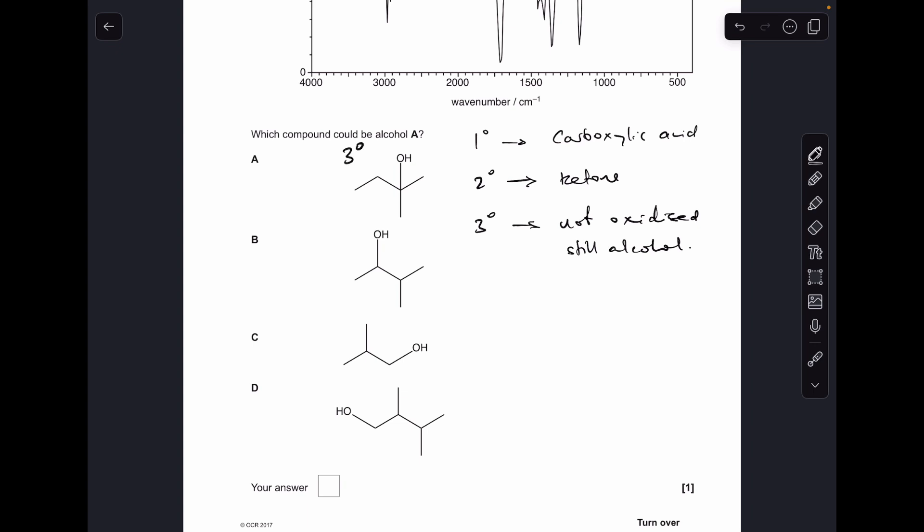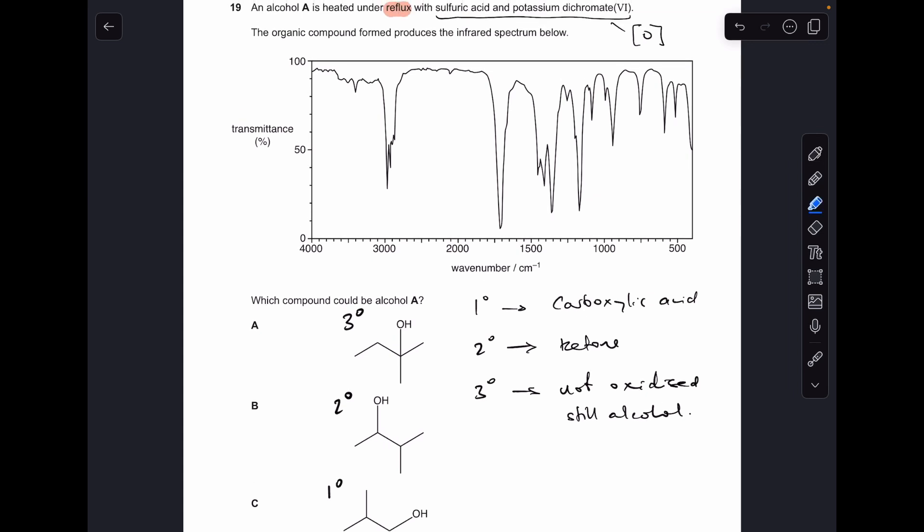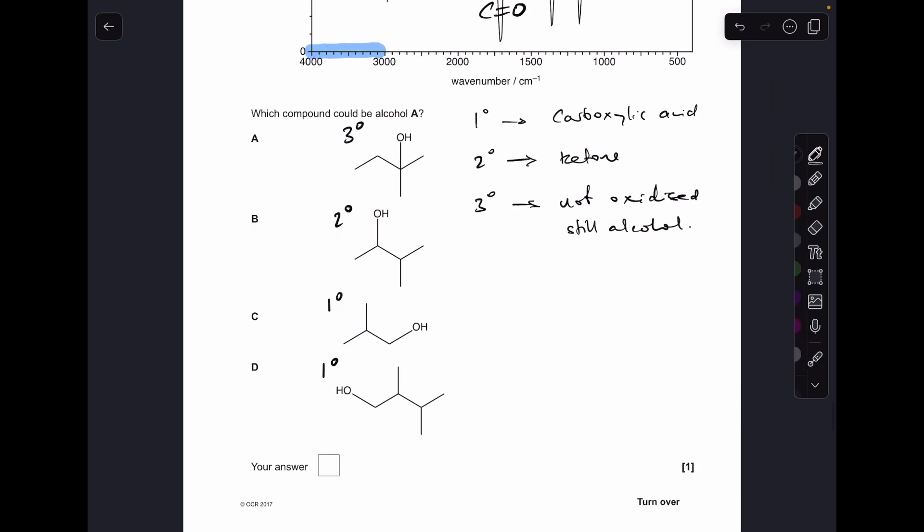So the best thing to do now is identify the types of alcohols we've got. So A, that's a tertiary alcohol. B is a secondary alcohol. C and D are both primary. If we go back to the infrared spectrum, you can see that we've got no activity in this region here. So there's no OH group in this product. And because of that, that means we can't have a carboxylic acid, we can't have an alcohol. So it's got to be a ketone, and it is because we've got the C=O there. So the answer must be B, secondary alcohol.